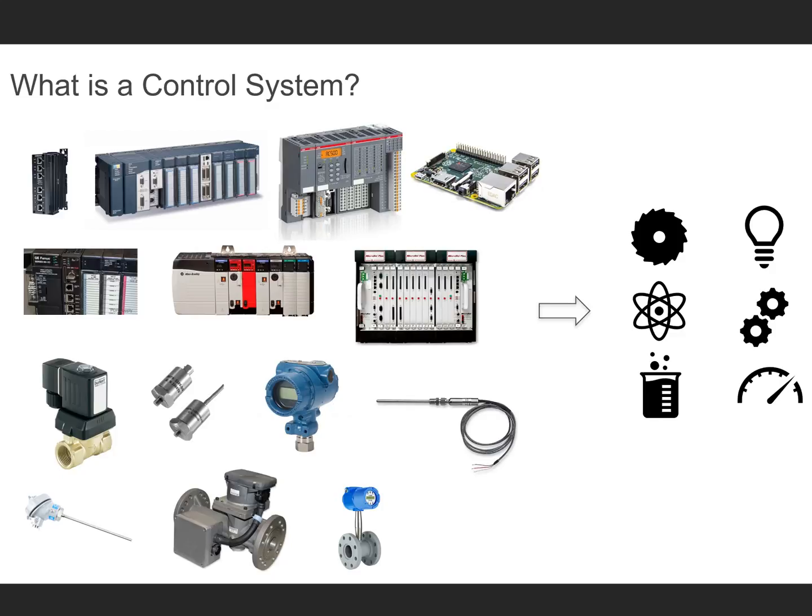There are many different types of control systems. The main heart of a control system is the controller. I'm showing a few different types here above. The controller's range and size, complexity and capability vary. Choosing the correct controller is a key deliverable for a control systems engineer.